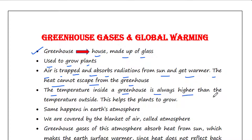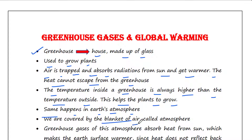The temperature inside the greenhouse is always higher than the temperature outside, which helps plants to grow. The same happens in Earth's atmosphere — although we are not covered by glass, but by a blanket of air which is called the atmosphere.